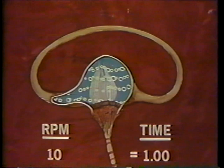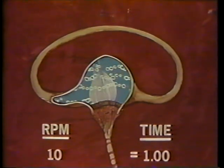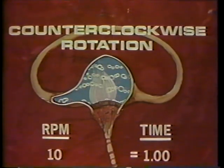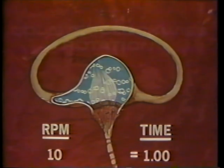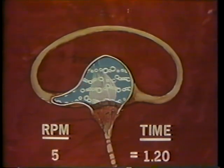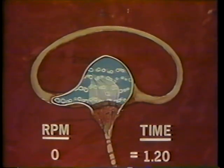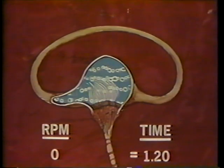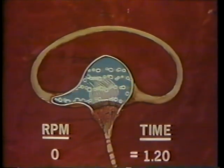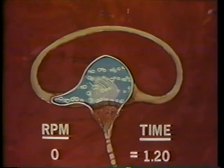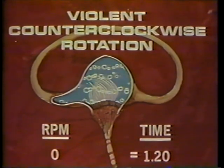Deceleration causes the subject to sense a counterclockwise turn, due to the cupola tilting in the opposite direction. When stopped suddenly to zero rpm, the fluid continues to rush onward, bending the cupola all the way over and indicating a violent turn to the left.